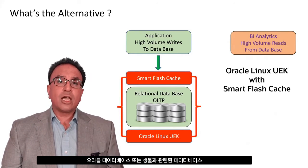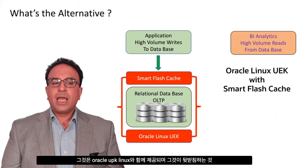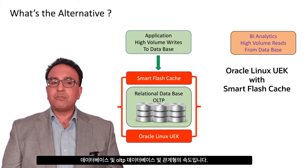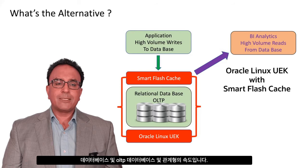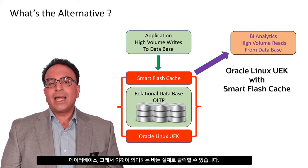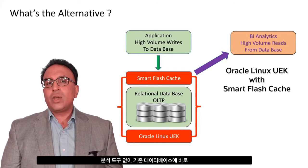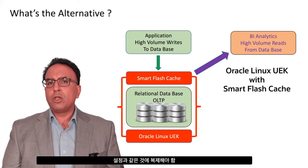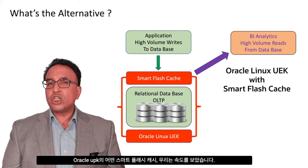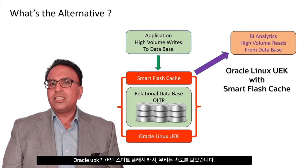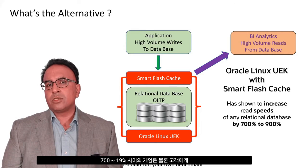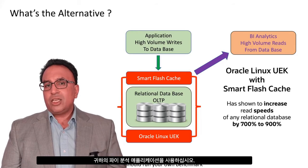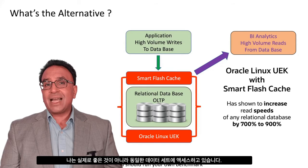Smart Flash Cache is a feature that comes with Oracle UEK Linux. What it does is underpin, as part of the operating system, a feature that actually enhances the speed of an OLTP or relational database. This means you can actually plug your BI analytics tool straight into your existing database without having to replicate it onto something like an OLAP or even setting up an OLAP in the first place. With Smart Flash Cache in Oracle UEK, we have seen speed gains between 700 to 900% in our customers. Of course, you've got to do your own benchmarking, but with these speed gains, it means that you can use your BI analytics application and just access the same dataset.